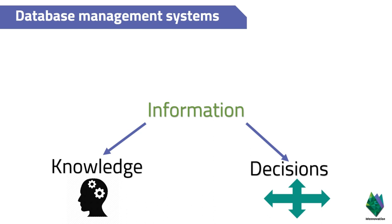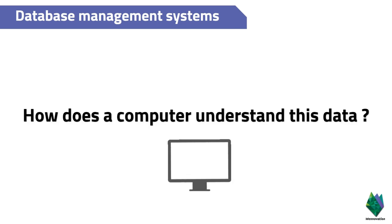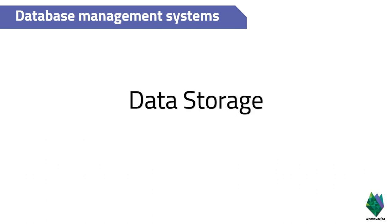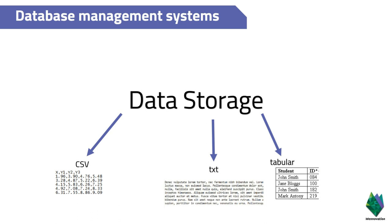How does a computer understand data? We know data is supposed to be text, a number, or a media file — but how does a computer know which one it is? This is where data storage comes in. Your data in a computer is stored in either a CSV, a text file, or in tabular form. The tabular form is the one we will be studying in great detail, because database management systems store data in tabular form.